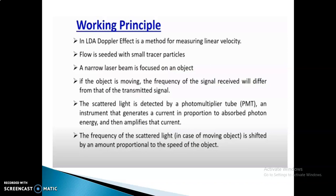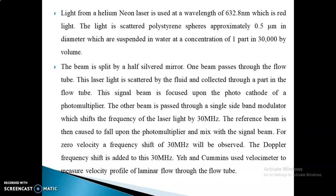The laser beam is focused on the object. When the object is moving, the frequency of the signal will also change. The scattered signal is detected through the PMT. Inside the PMT, we have an electron gun, and whatever particles come out of it will be converted in terms of current. That value will be amplified through the amplifier section inside the PMT, so the output of the PMT will have a current.